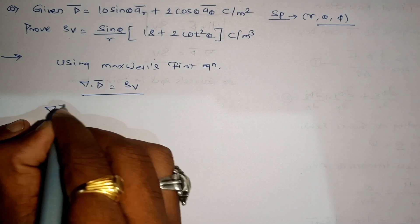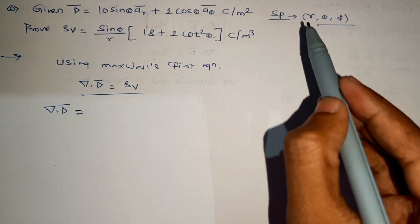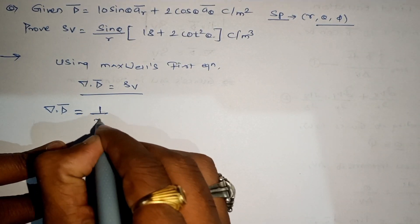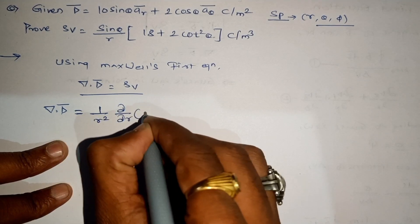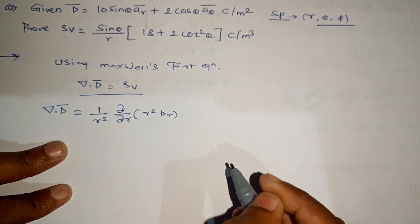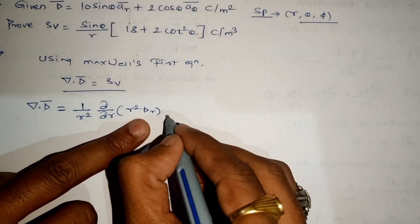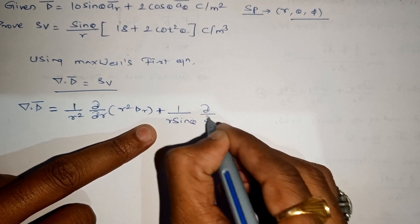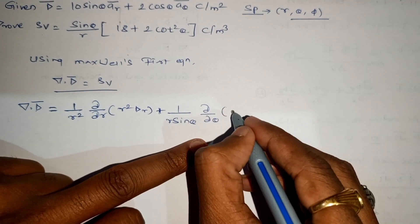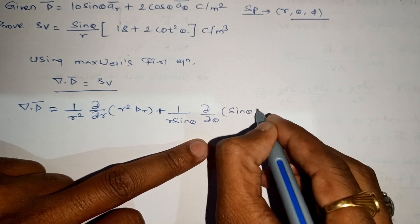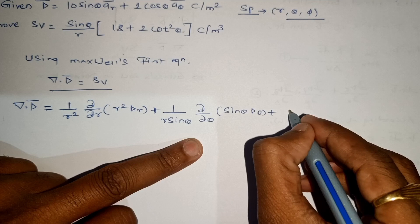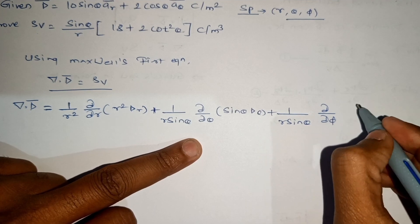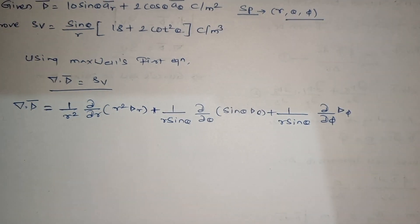In spherical coordinates with variables r, theta, and phi, the divergence of D-bar is: (1/r²)(∂/∂r)(r² D_r) plus (1/(r sin θ))(∂/∂θ)(sin θ · D_θ) plus (1/(r sin θ))(∂/∂φ)(D_φ).